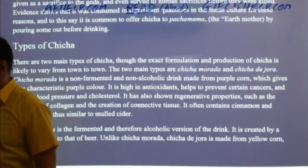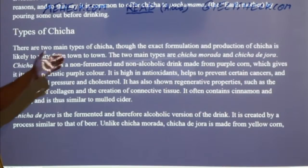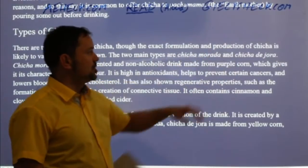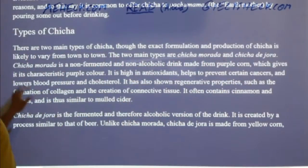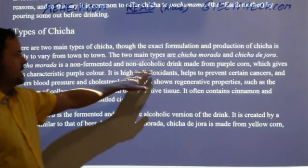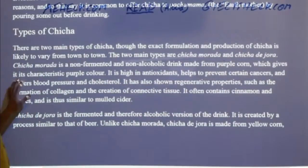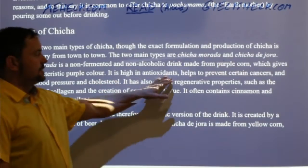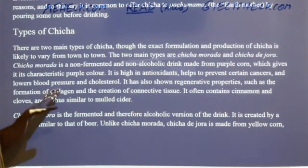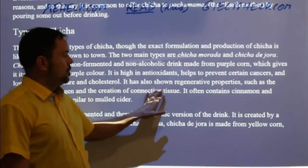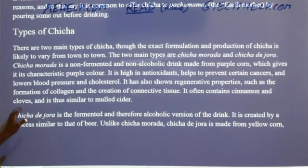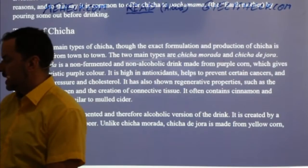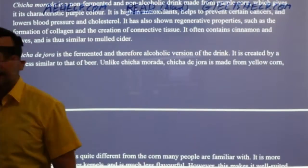Types of chicha: there are two main types, though the exact formulation and production likely vary from town to town. Chicha morada is a non-fermented, non-alcoholic drink made from purple corn, which gives it its characteristic purple color. It is high in antioxidants, helps prevent certain cancers, and lowers blood pressure and cholesterol. It has also shown regenerative properties such as the formation of collagen and connective tissue. It often contains cinnamon and cloves, making it similar to mulled cider.